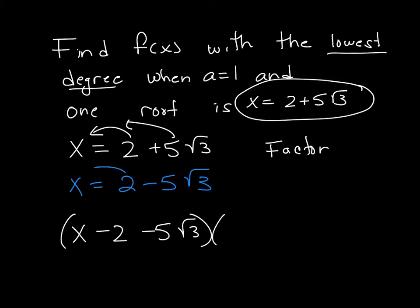And then the other do the same. I move the 2 and the negative 5, and that becomes x minus 2 plus 5 square root of 3.